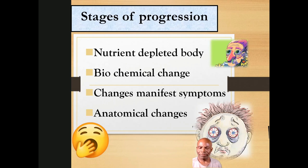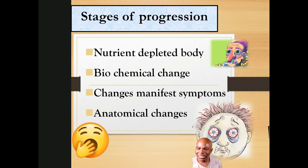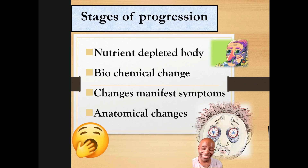Number four: depletion causes functional changes, which can manifest as symptoms like tiredness, gas, upset stomach. You can be angry, have a lack of concentration, feel foggy — all of those different things. These are functional changes that manifest symptoms.